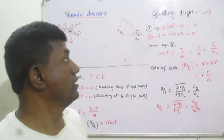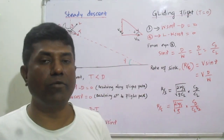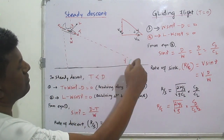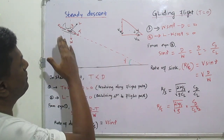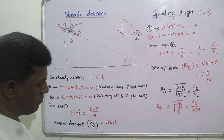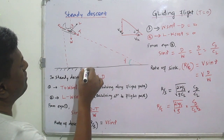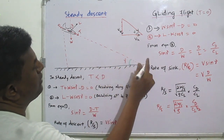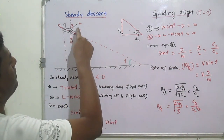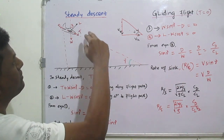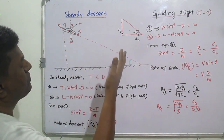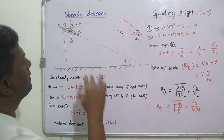In steady descent, the aircraft is at a certain altitude and starts to come down. The aircraft is at this position, and when it wants to reach a point on the earth's surface, it starts to descend from its initial position to that point.